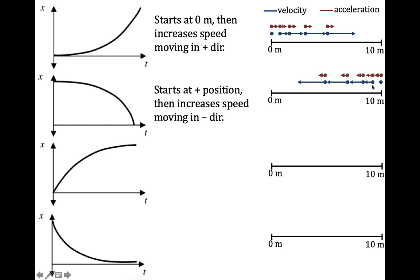So acceleration to the left — or negative acceleration — doesn't automatically mean slowing down. You have to look at it in the context of the direction of the object. In our first example we had positive acceleration and it increased speed; here we have negative acceleration and it also increases the object's speed, because both point in the same direction as the motion.